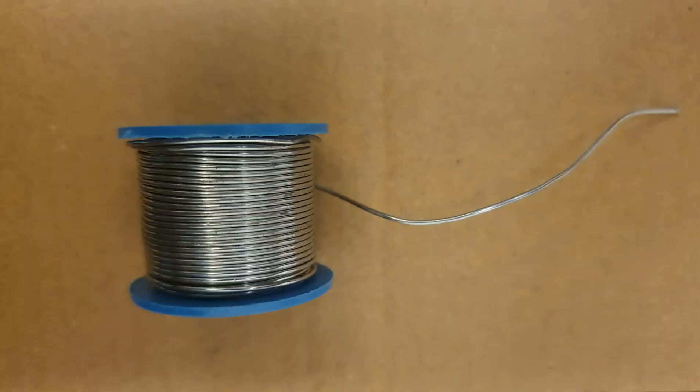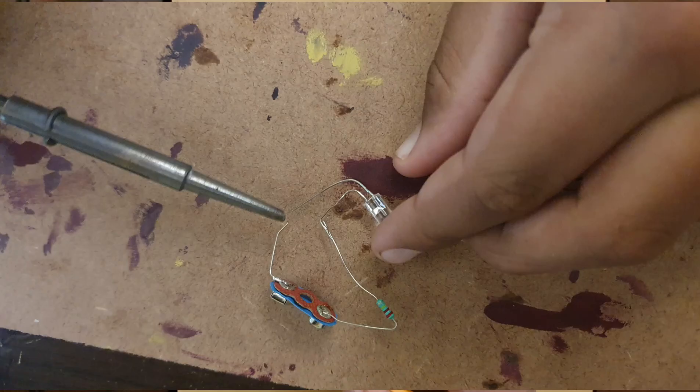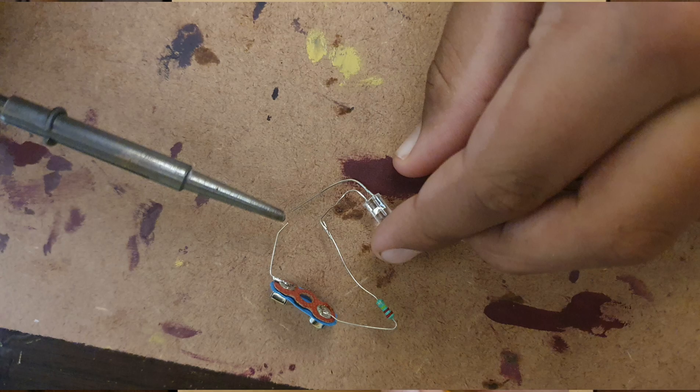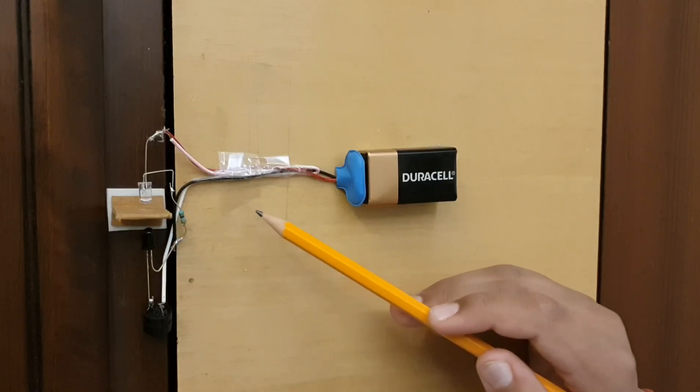We have soldered all the connections wherever possible, and the battery and the obstruction are stuck to the door with the help of double-sided tape.